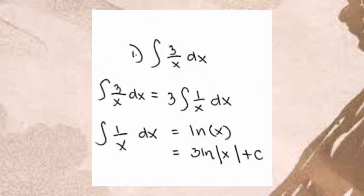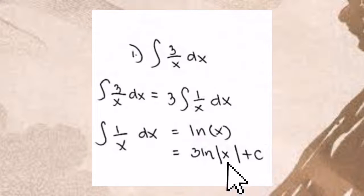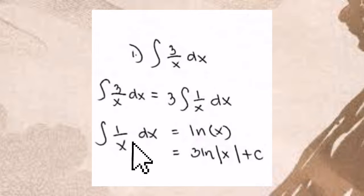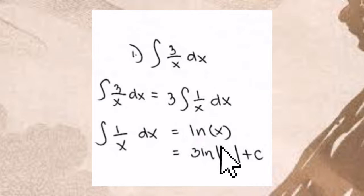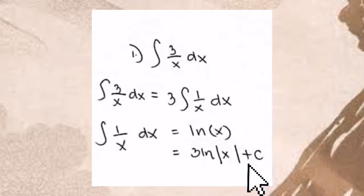The integral of 1 over x dx becomes ln of x. So the final answer is 3 times ln of the absolute value of x plus C.